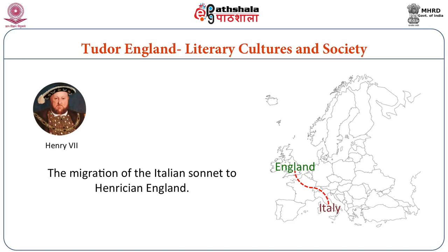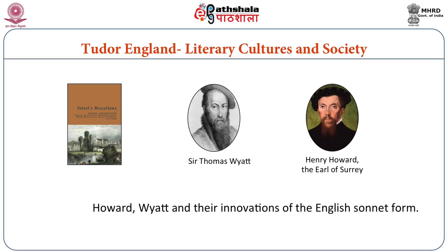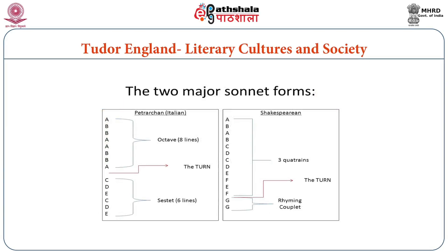The Italian sonnet migrated to England in the time of Henry VIII, primarily due to the efforts of Wyatt and Howard, Earl of Surrey. Thomas Wyatt the elder and Henry Howard, Earl of Surrey, both wrote sonnet sequences, which were published in what is today called Tottel's Miscellany — earlier titled Tottel's Songs and Sonnets. Howard and Wyatt were also responsible for reshaping the sonnet from the Petrarchan model to what is called the English sonnet form. Where the Petrarchan model had an octave and a sestet, the English sonneteers transformed it into three quatrains followed by a couplet.